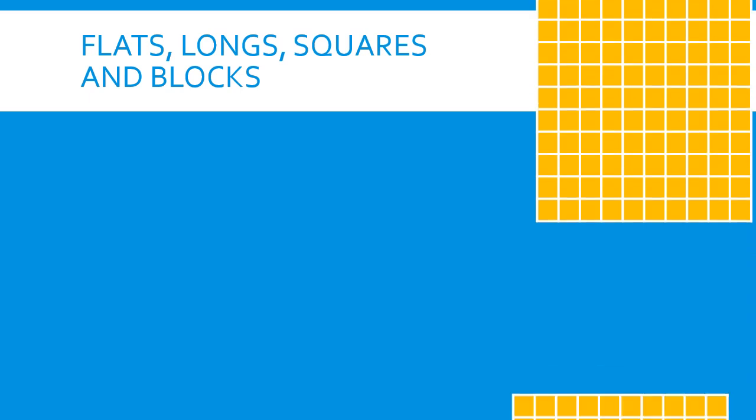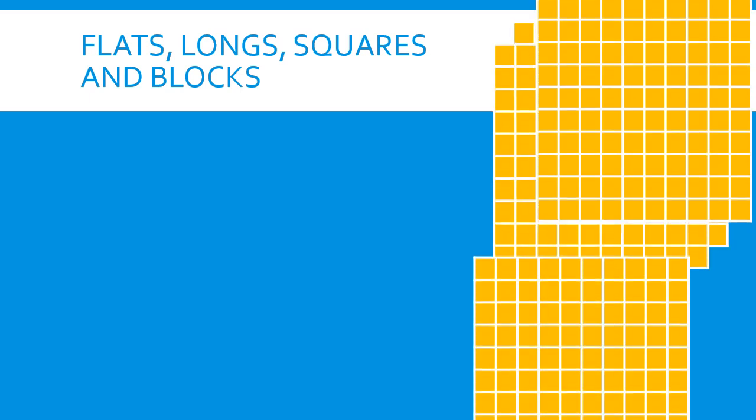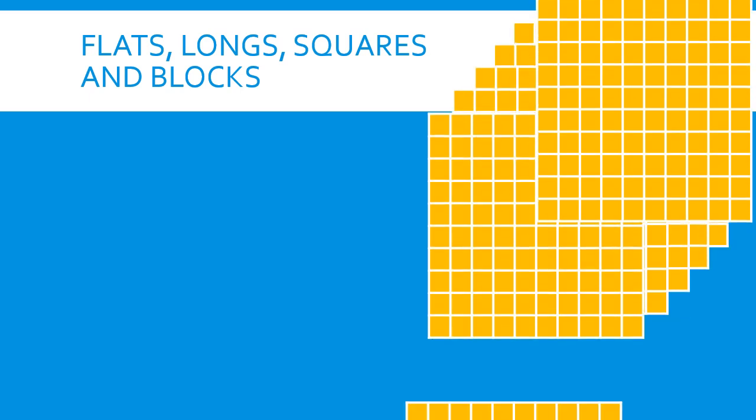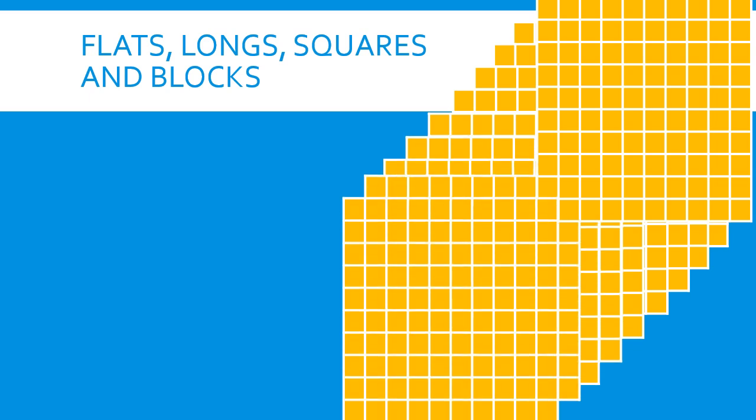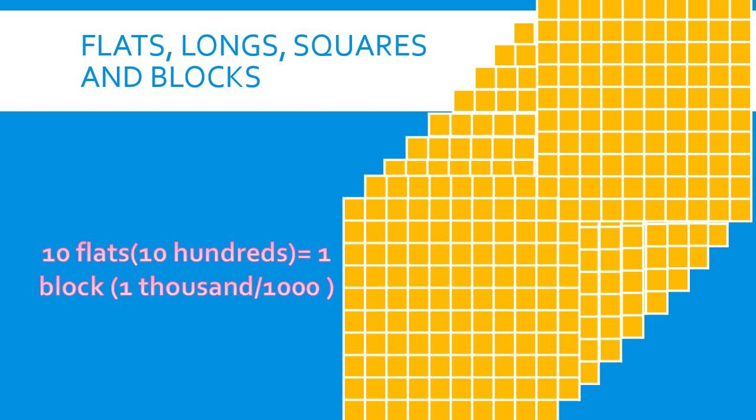If we put 10 flats together — 1, 2, 3, 4, 5, 6, 7, 8, 9, 10 — we can form 1 block, which is equal to 1,000. If we count all the squares in this block, there are 1,000 squares. But if we count them one by one, it would take so much time — the reason why we need representation to make counting easier.